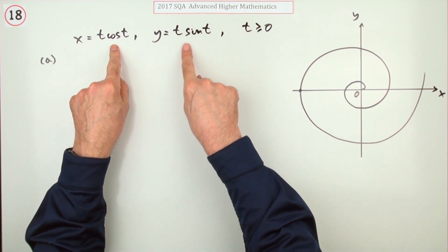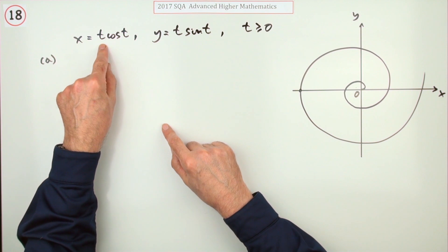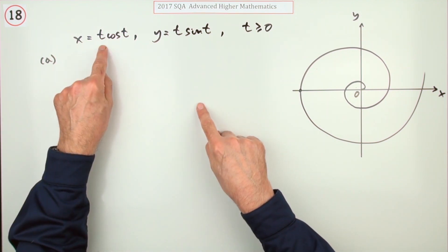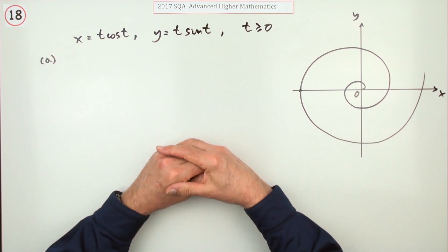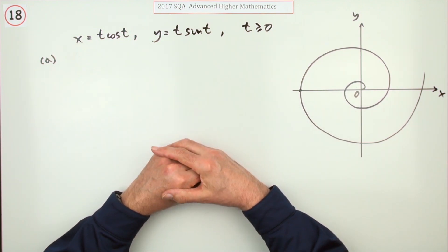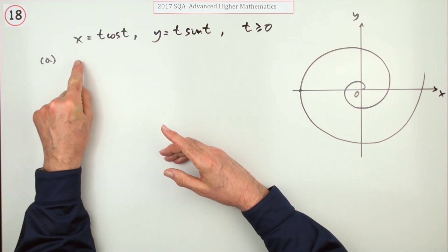Cos and sine means it's going in a circle, multiplying by t means as it goes round in the circle it gets further and further out—classical Archimedean spiral.